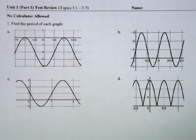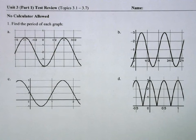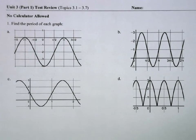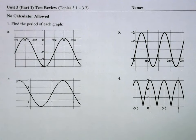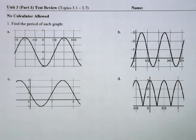In this video, I'm going to review AP Pre-Calculus topics from Unit 3, Part 1, which covers topics 3.1 through 3.7, primarily talking about sine and cosine — their values and their graphs.